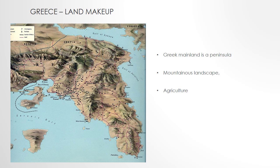Greece did have a temperate climate with mild rainy winters and hot, dry summers. Average temperatures were about 50 degrees in winter and about 80 degrees in summer, and this encouraged outdoor activities — one of the main reasons that the Olympic Games came about in Greece. Since it was a rocky land, only 20-30% of the land was good for farming, and that was mostly in the valleys. But despite it being so difficult to farm, over half of all Greeks were farmers and herders.